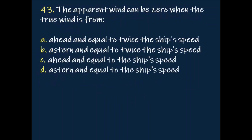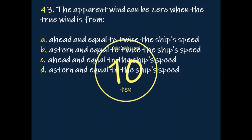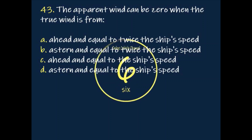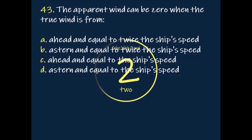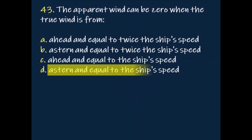Question: The apparent wind can be zero when the true wind is from? Answer: A stern direction equal to the ship's speed.